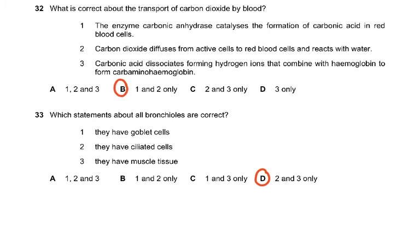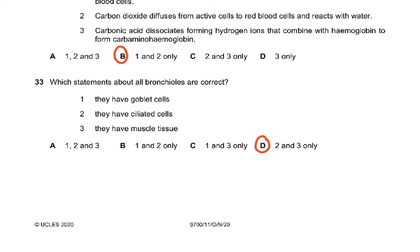Question 32: What is correct about the transport of carbon dioxide by blood? It is 1 and 2. The enzyme carbonic anhydrase catalyzes the formation of carbonic acid in red blood cells, and carbon dioxide diffuses from active cells to red blood cells and reacts with water. Why is 3 wrong? Hemoglobin combines with hydrogen to form haemoglobinic acid not carbaminohemoglobin.